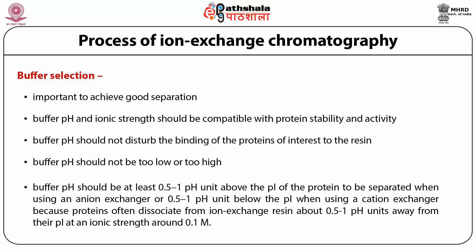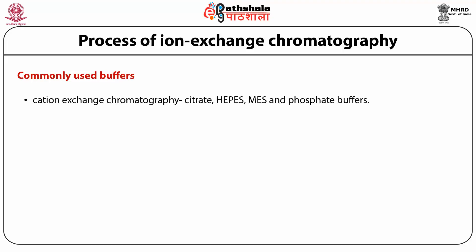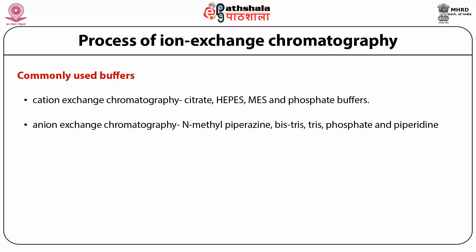At an ionic strength around 0.1 molar, proteins often start to detach from the ion exchange resin about 0.5 to 1 pH unit away from their pI. Thus, the pH of the buffer should be at least 0.5 to 1 pH unit below the pI of the protein when using a cation exchanger, or 0.5 to 1 pH unit above the pI when using an anion exchanger. Commonly used buffers in cation exchange include citrate, MES, and phosphate. Buffers used in anion exchange include N-methylene piperazine, BisTris, Tris, phosphate, and piperidine.